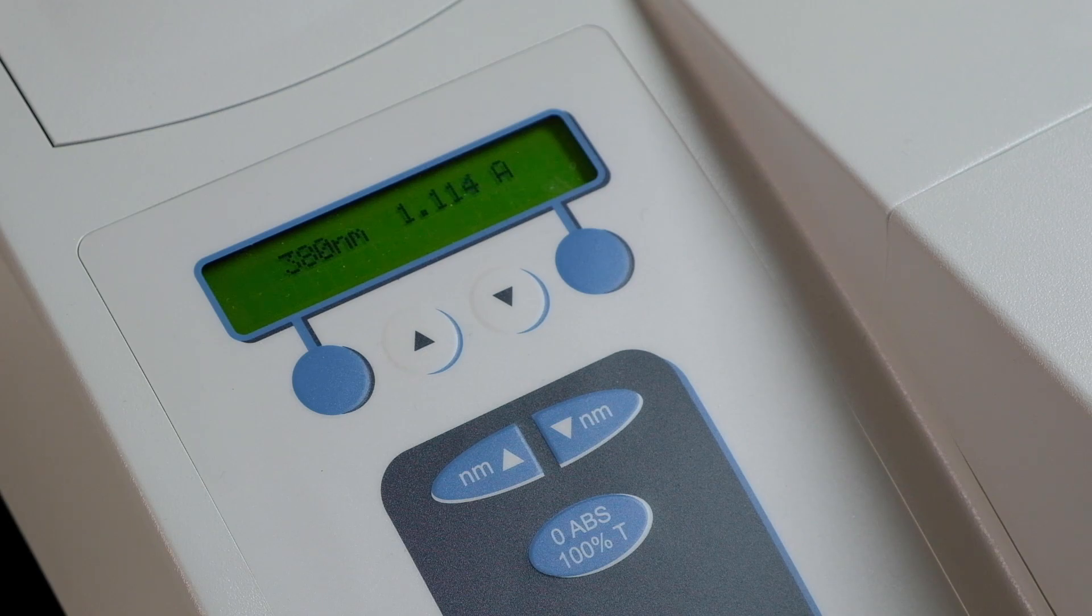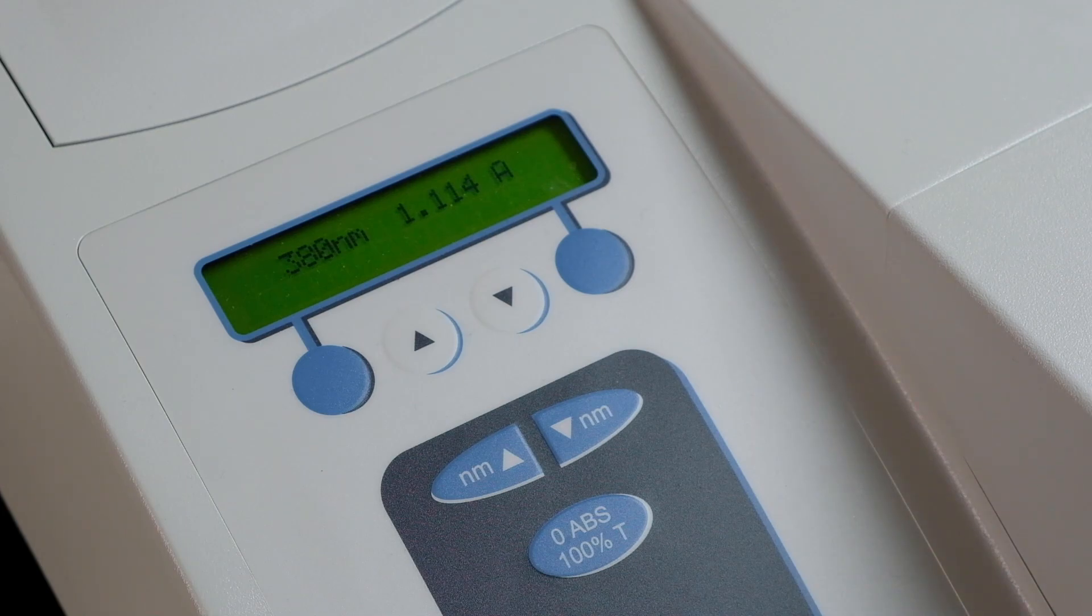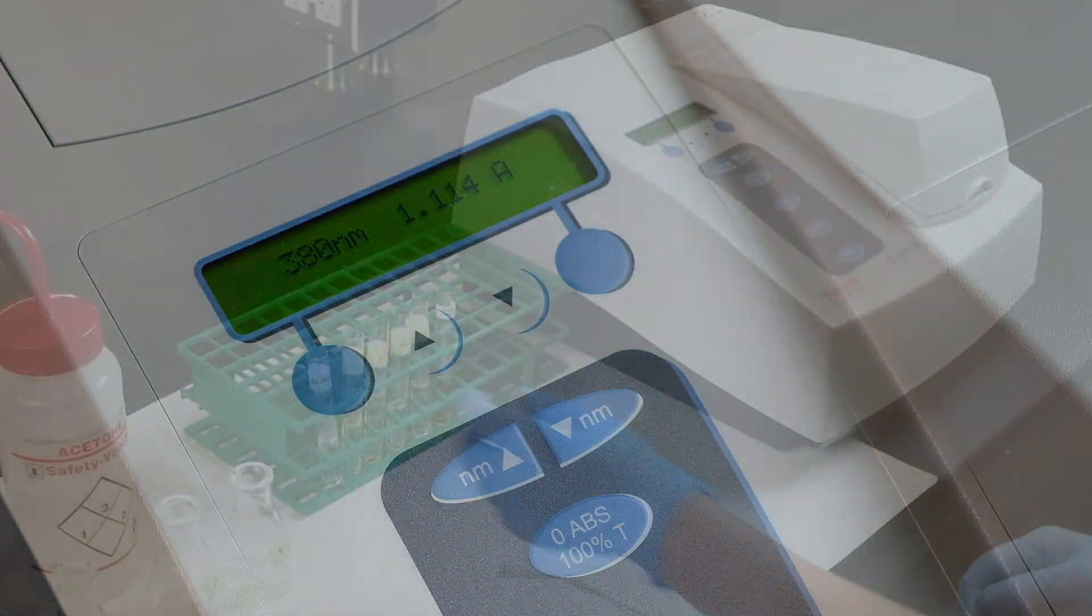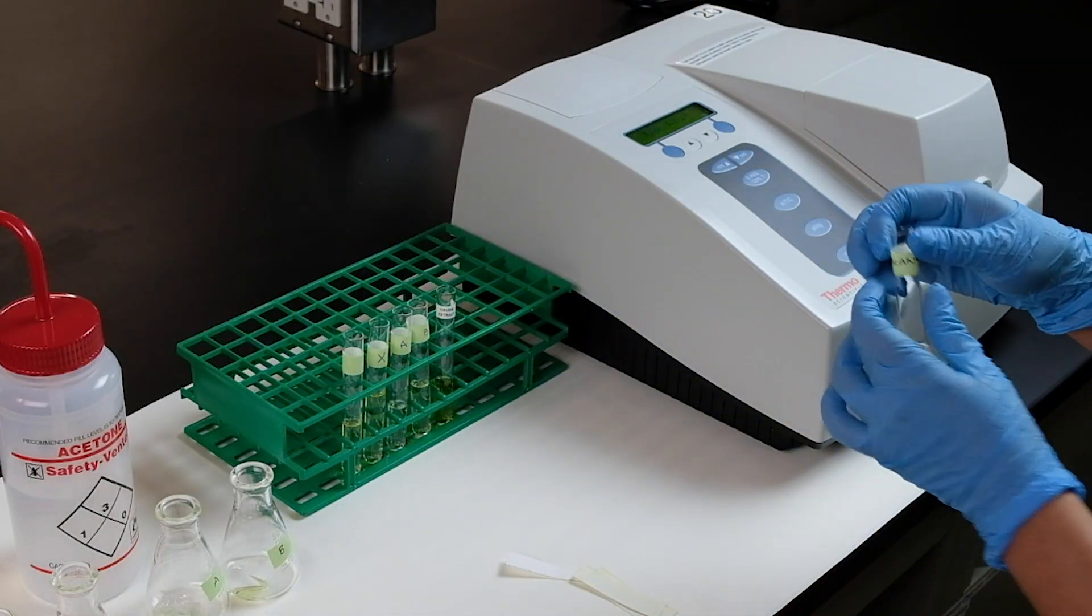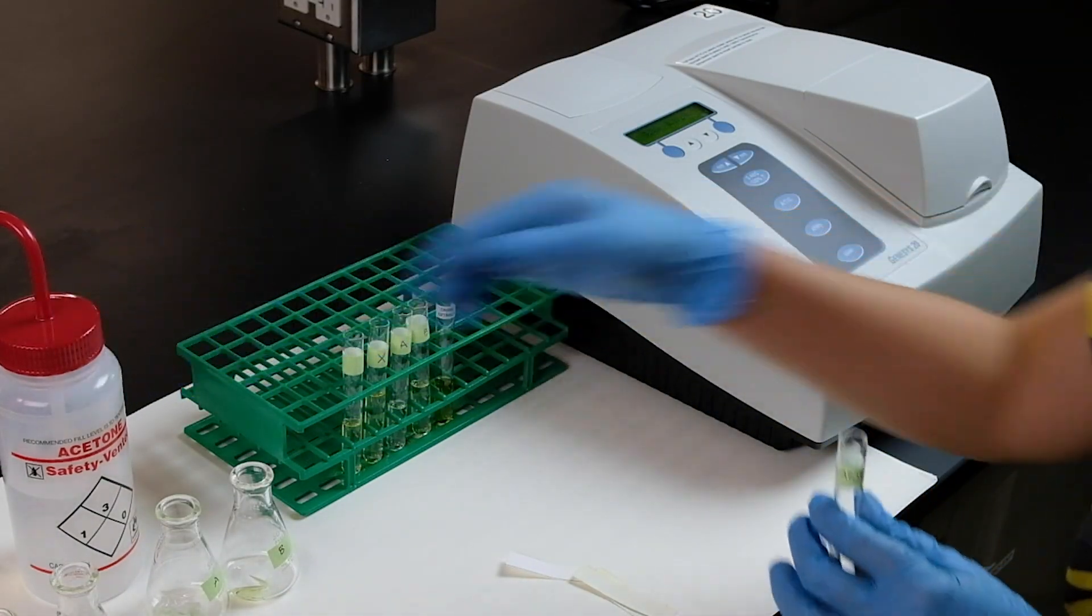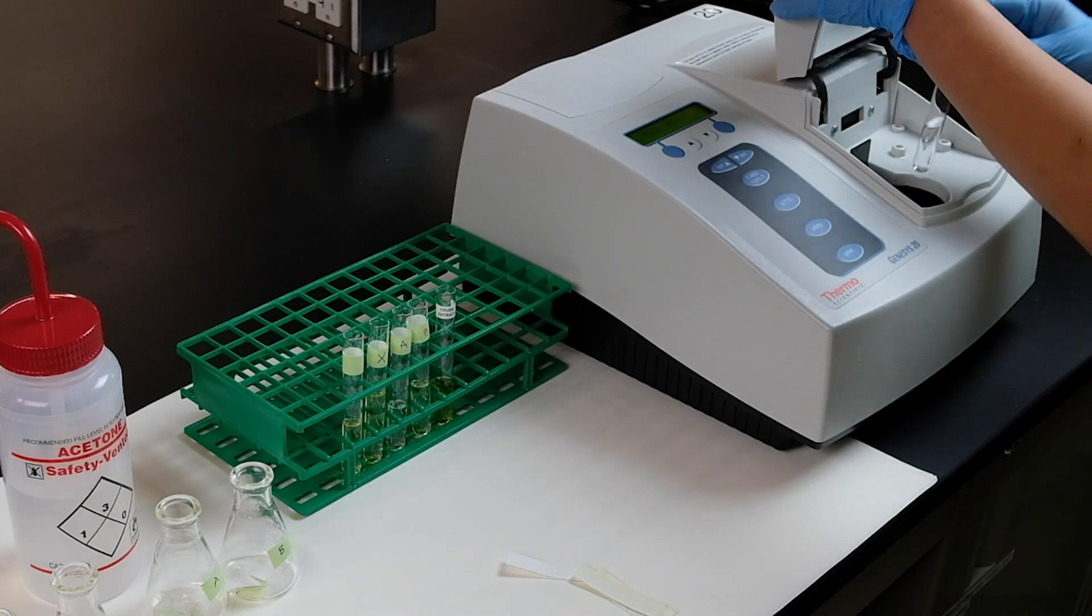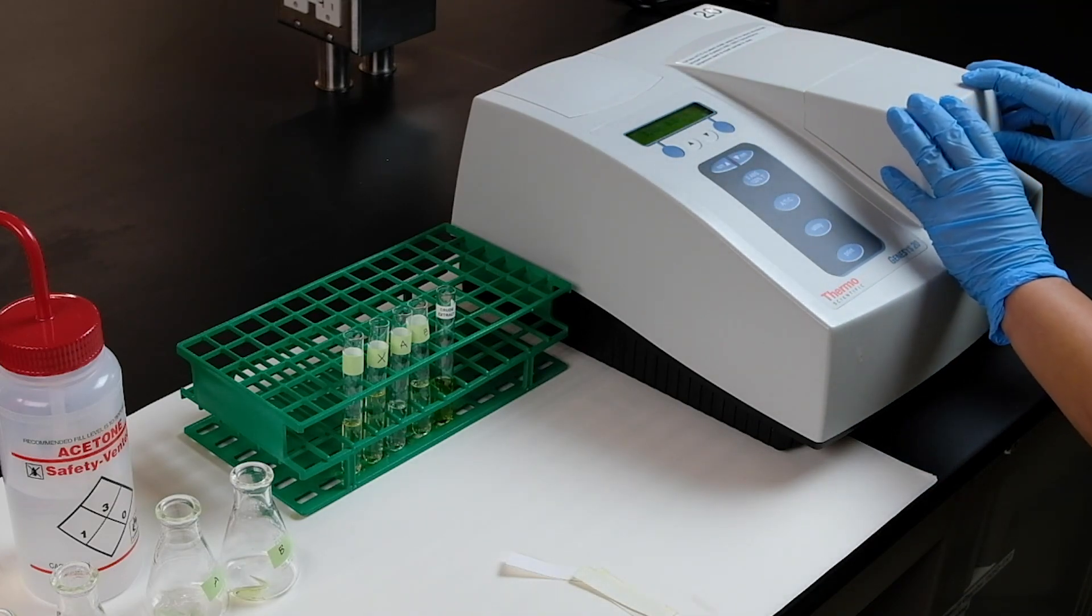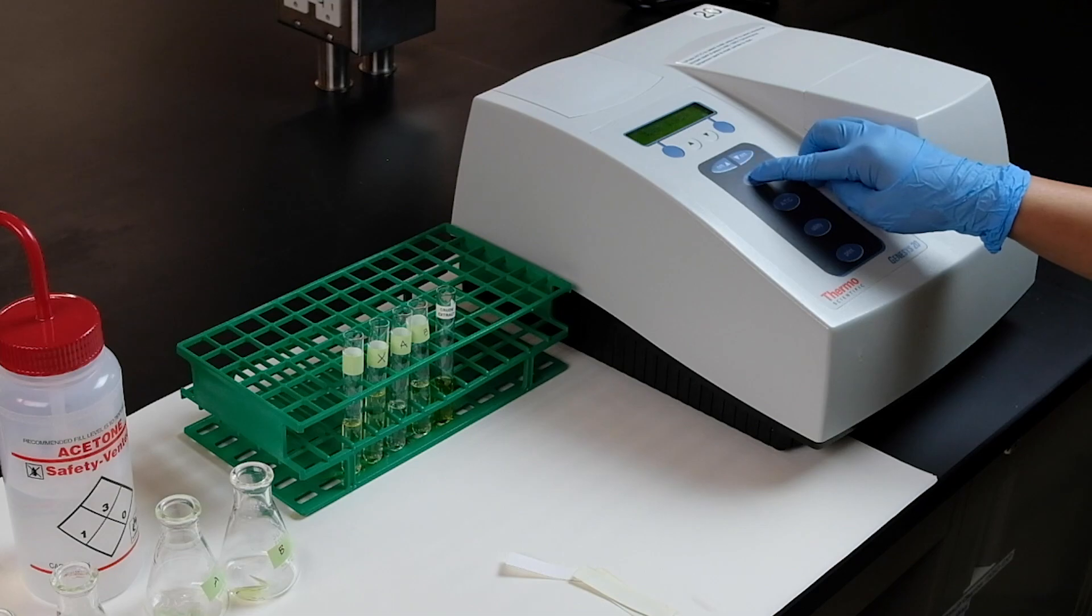Before each series, we have to blank before any reading. In this experiment, the blank would be 80% acetone. In order to blank it, you have a blank ready with your acetone, click it in the slot, and press 0 ABS.